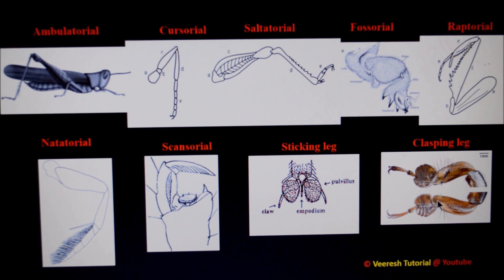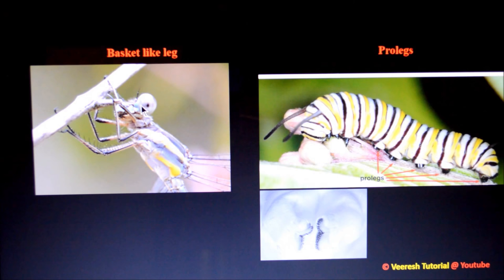The next type is clasping-type legs. The forelegs of male water beetles are modified into clasping legs. Here, the first three tarsomeres are modified into clasping discs, which are useful in clasping the female during mating.